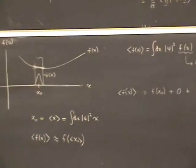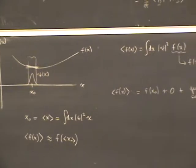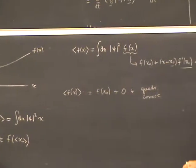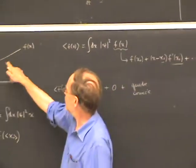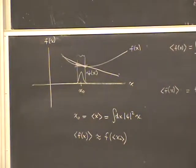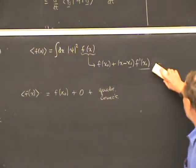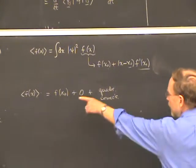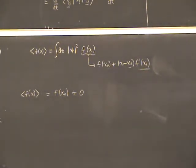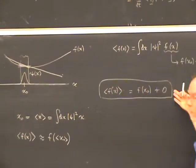A further remark: there are some circumstances in which the approximation is exact. It's easy to see what they are — if the function f were a straight line, its Taylor series expansion terminates at first order, so there wouldn't be any quadratic corrections. This calculation would be exact. We'd have f(x_0) plus zero. So for a linear function of x, this relationship is exact.